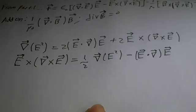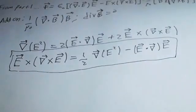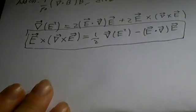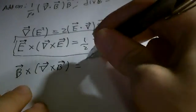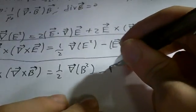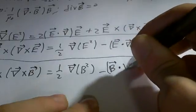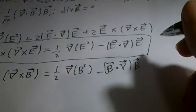E cross the curl of E gives us one-half of the gradient of E squared, minus E dot del E. This is a handy result. Similarly for the magnetic field, we do the exact same thing — just replace E with B — so B cross the curl of B gives us one-half grad of B squared minus B dot del B.